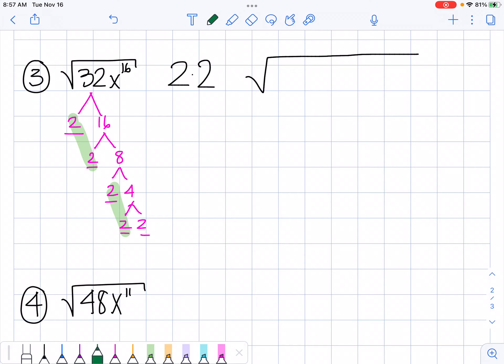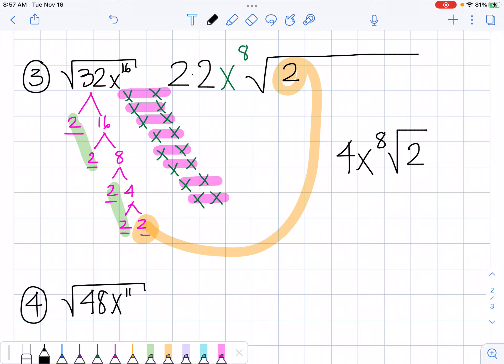And then I have 16 X's. So I'm going to write them all out: 1, 2, 3, 4, 5, 6, 7, 8, 9, 10, 11, 12, 13, 14, 15, 16. And I have 1, 2, 3, 4, 5, 6, 7, 8 pairs of X's. So this would be X to the 8, and I forgot this guy right here. We have a lonely guy that needs to go right up here. So my final answer is 4X to the 8 times the square root of 2.